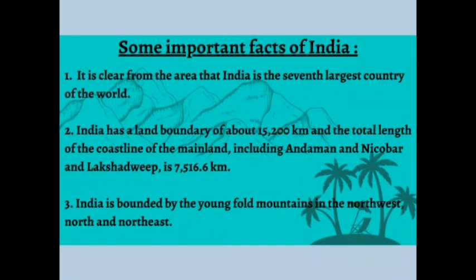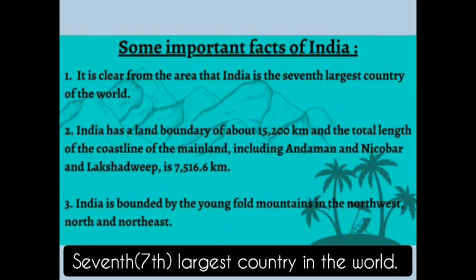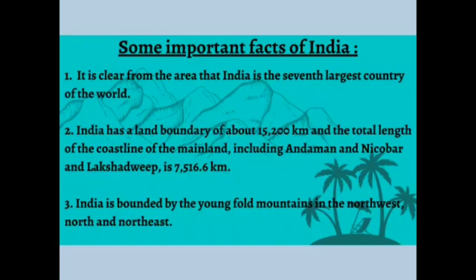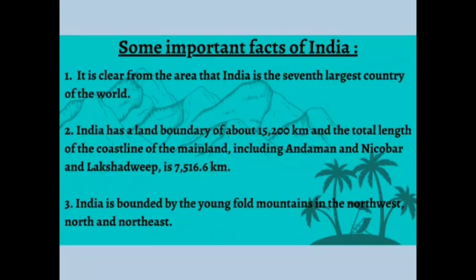India is the seventh largest country in the world, meaning there are six countries bigger than India. Out of 195 countries, India ranks seventh. India has a land boundary of about 15,200 kilometers and the total length of the coastline of the mainland, including Andaman and Nicobar and Lakshadweep, is about 7,516.6 kilometers.